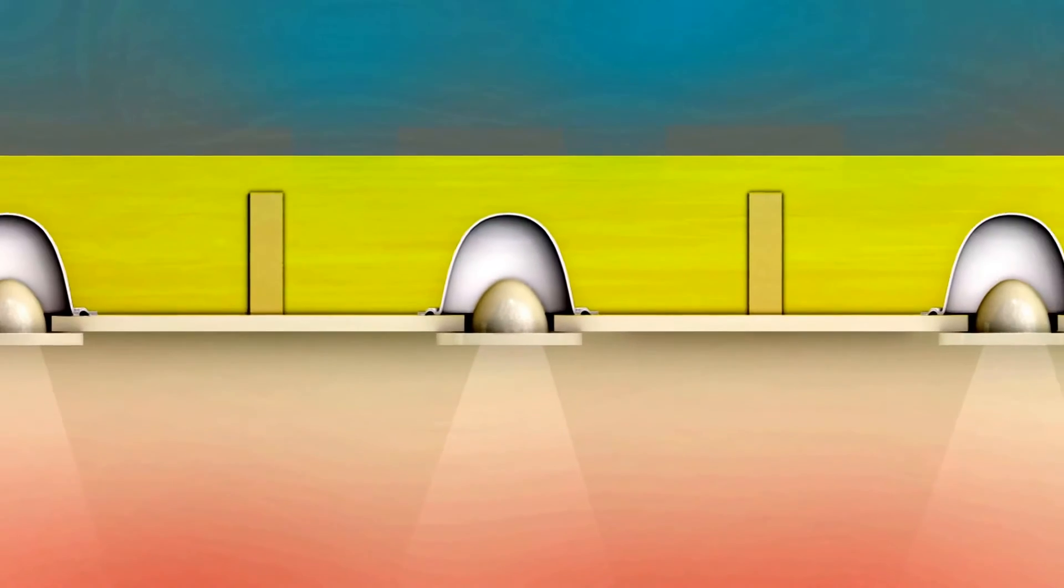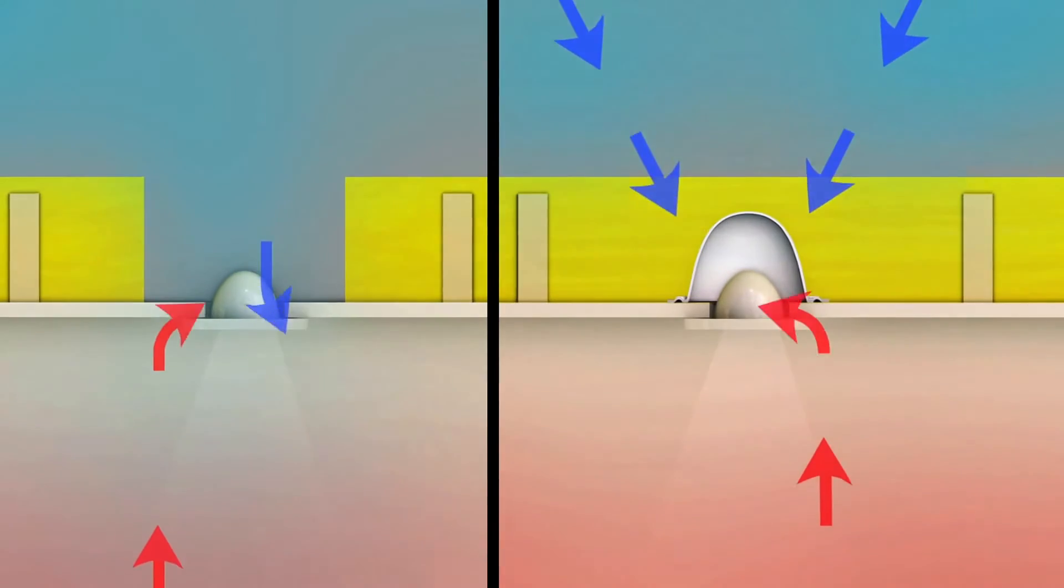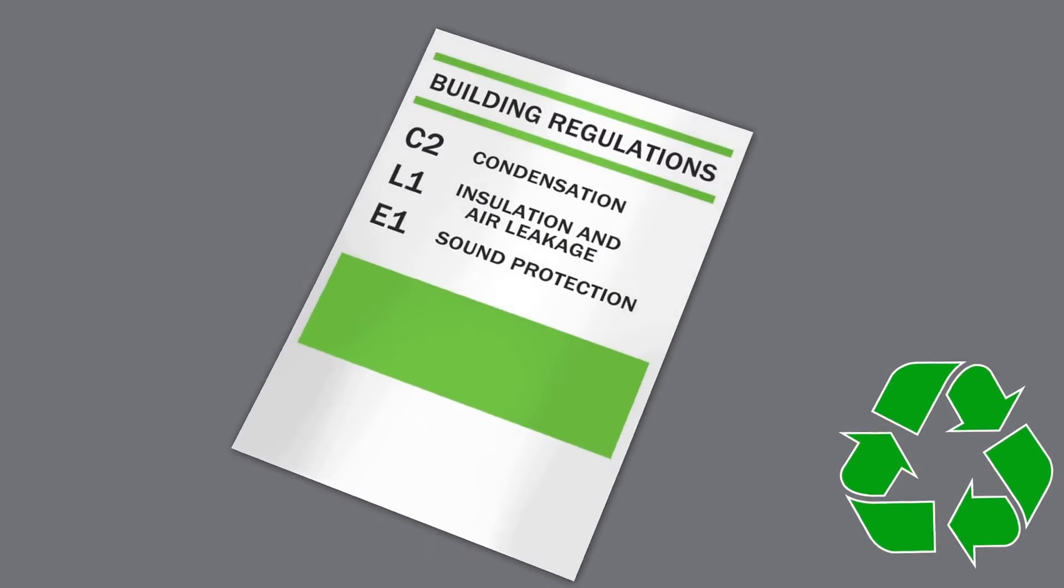Thermahood also allows for continuous insulation over and around the light. This drastically improves the insulation effectiveness and meets building regulations.